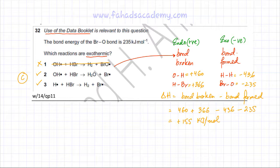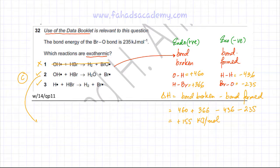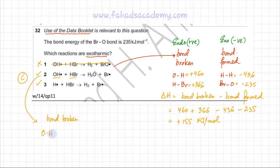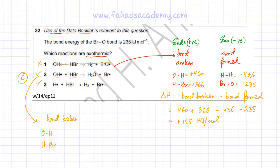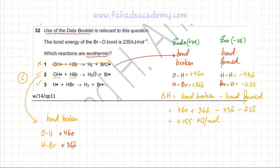Option C states that options 2 and 3 are correct. Let's confirm option 2. Looking at the second reaction, the bonds being broken are an OH bond and an HBr bond — similar to the first reaction. The OH bond energy is 460 kJ/mol (+460, endothermic) and the HBr bond is 366 kJ/mol (+366, endothermic). We borrow these values from the previous calculation.